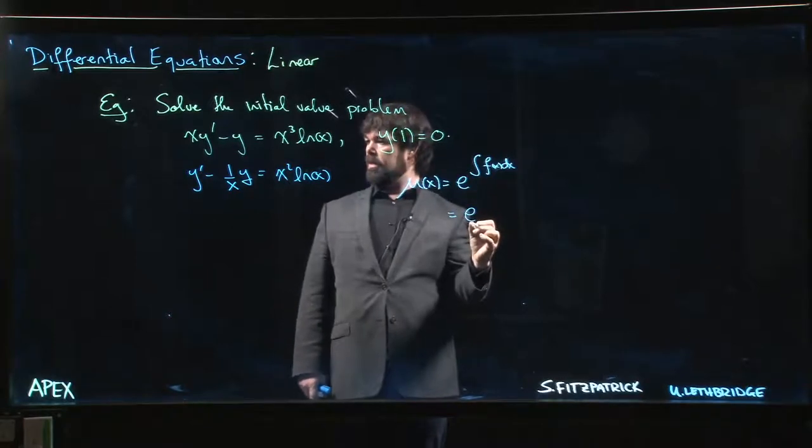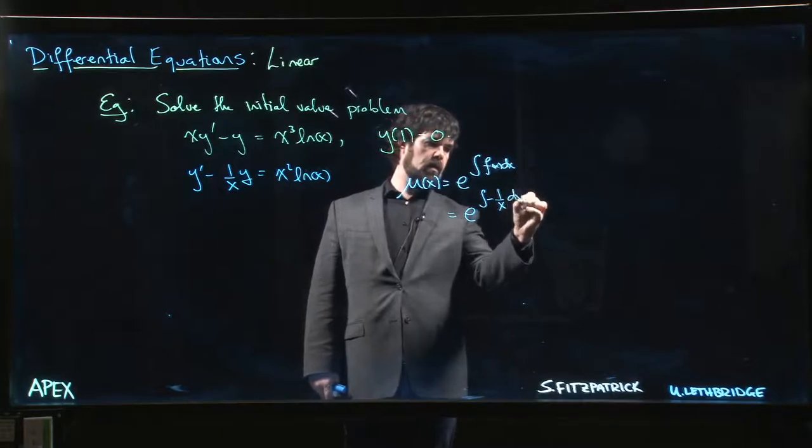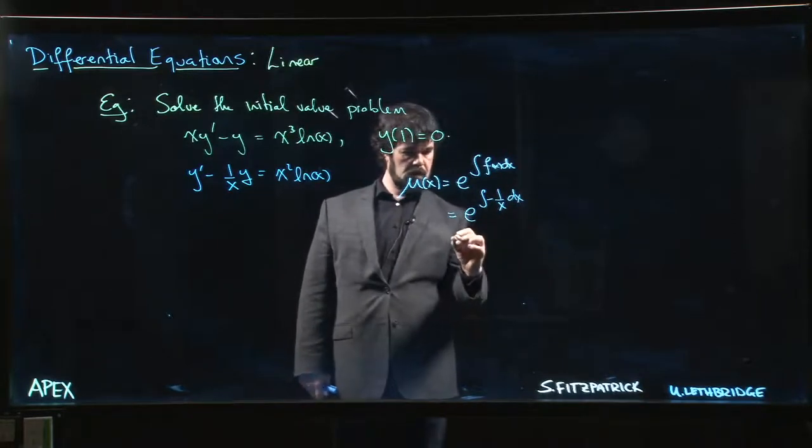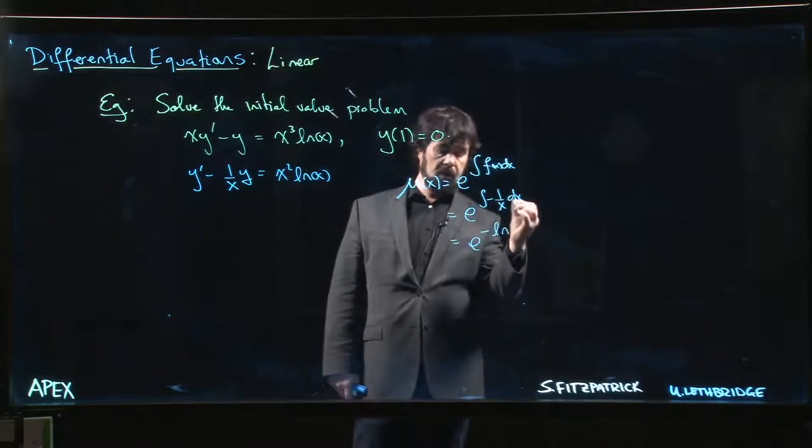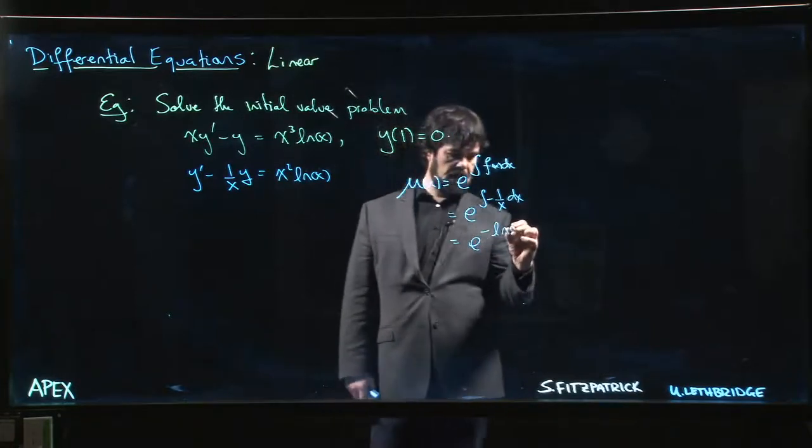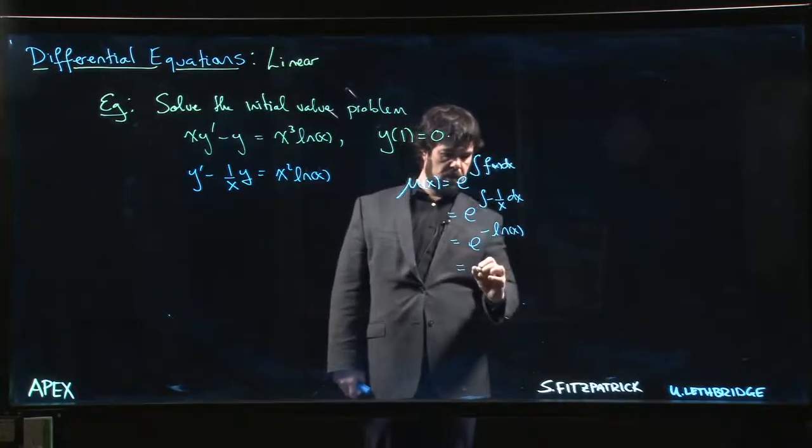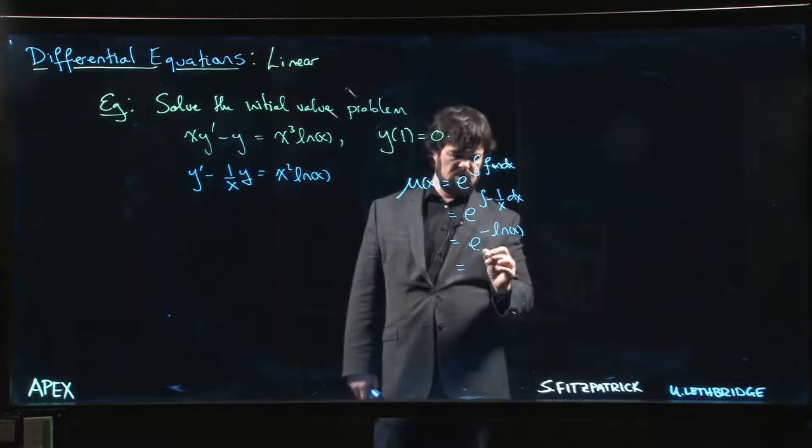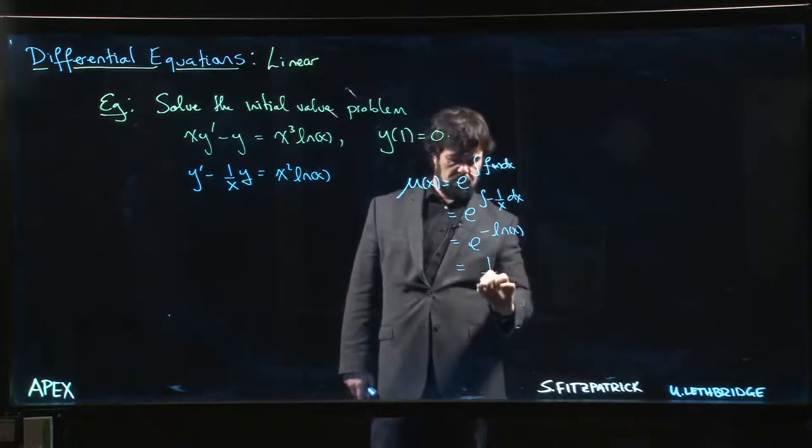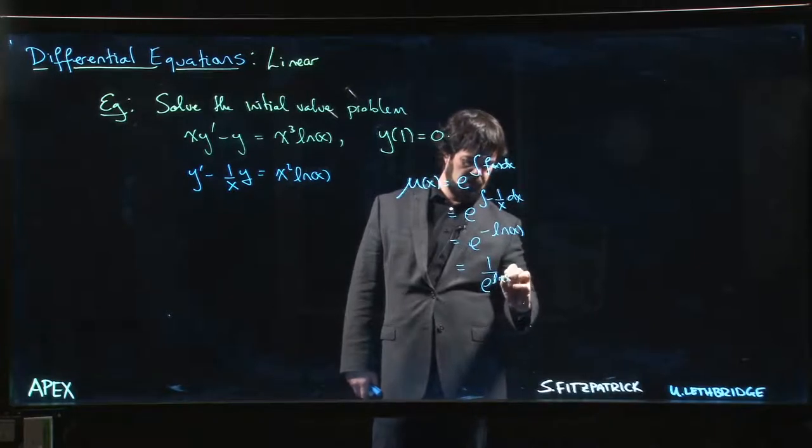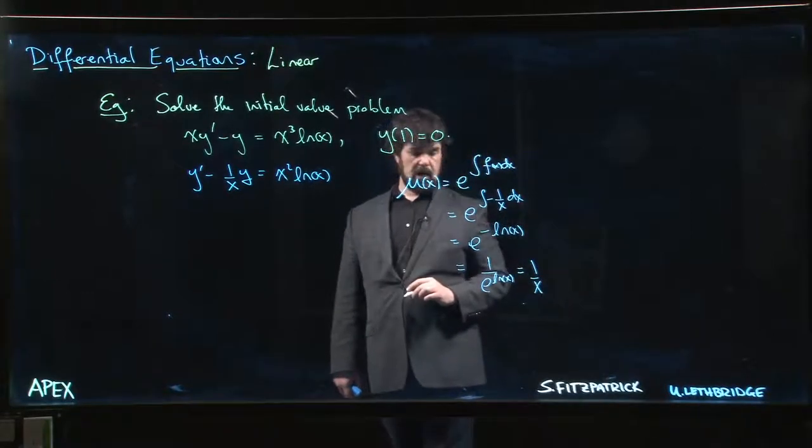So it's going to be e to the integral of -1/x dx. That's e^(-ln x). We can write this as (log x)^(-1), or as 1 over e^(log x). Whichever way you do it, the integrating factor is 1/x.